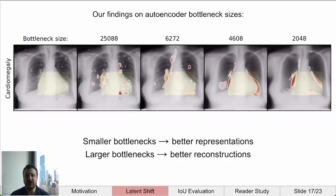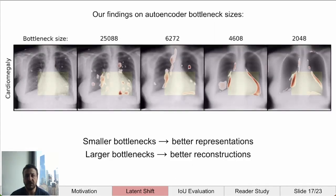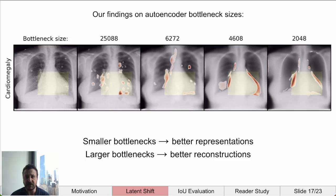The autoencoder used in this work was a large ResNet with a basic elastic reconstruction loss. We found that large bottlenecks didn't work well, but had very crisp reconstructions, and their interpolations didn't appear consistent with a good representation of pathologies. A smaller bottleneck caused blurry reconstructions, but the representation appeared to capture the pathologies better.